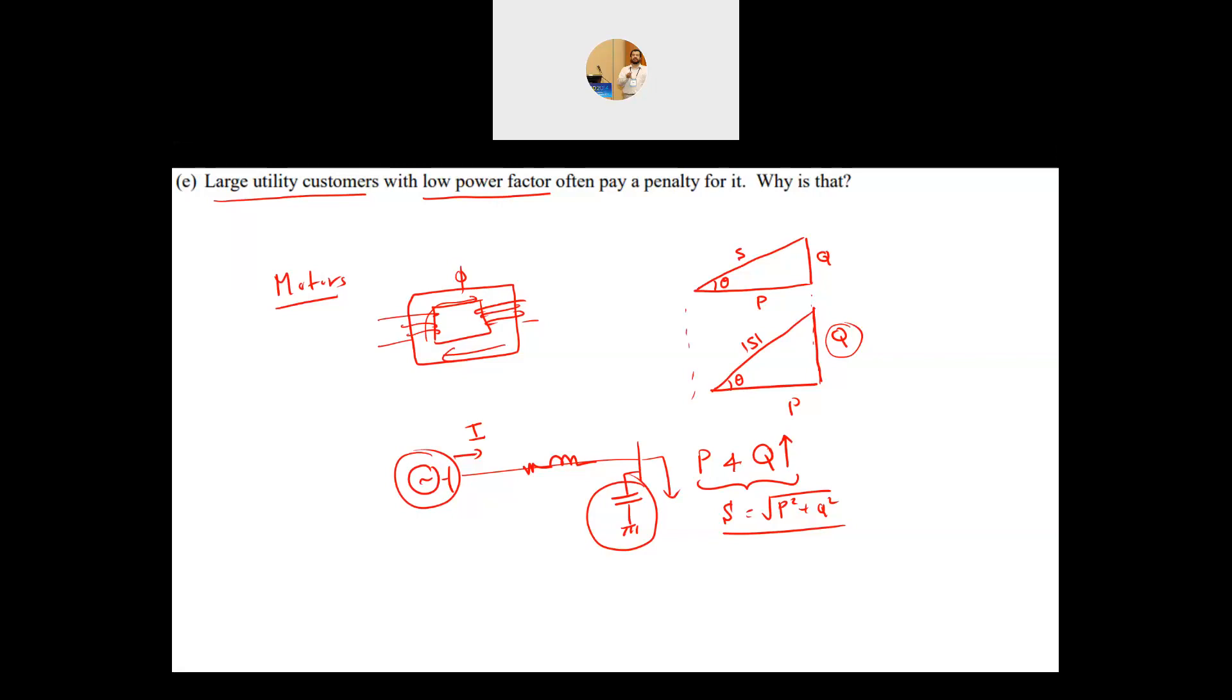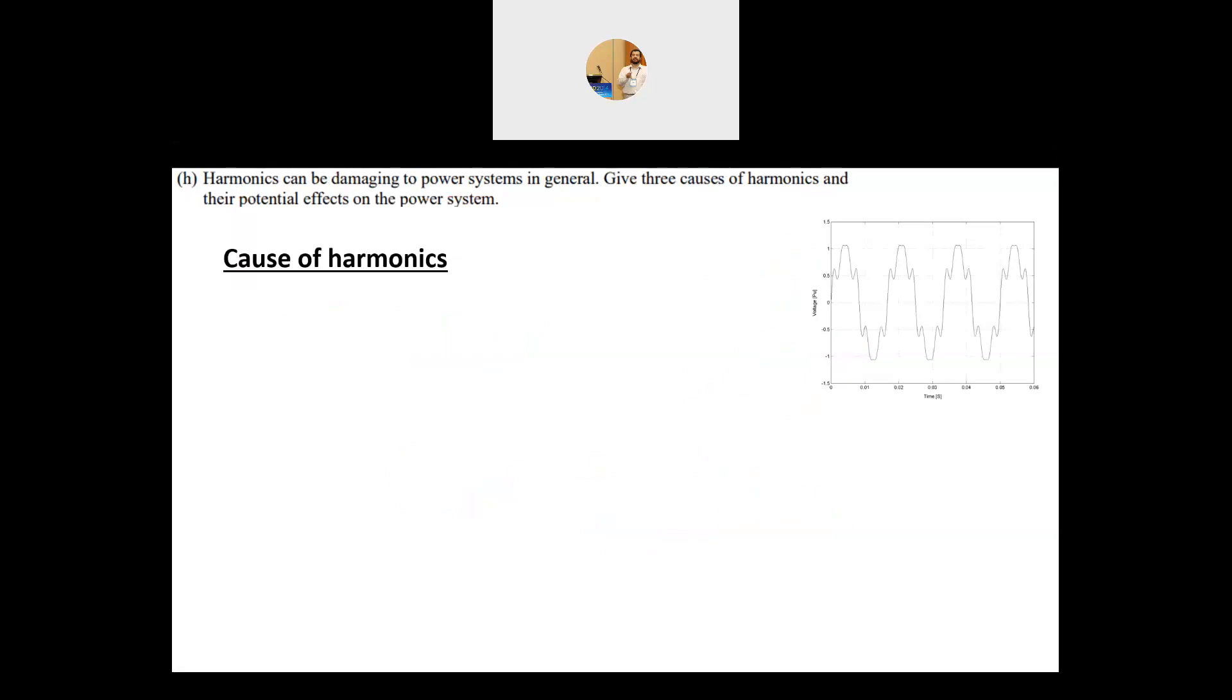The second question is: harmonics can be damaging to the power system in general. Give three causes of harmonics and their potential effects on the power system. In Canada we have 60 Hz, this is our fundamental frequency.